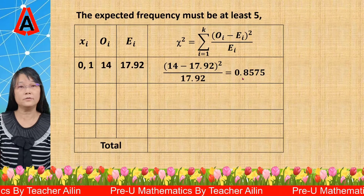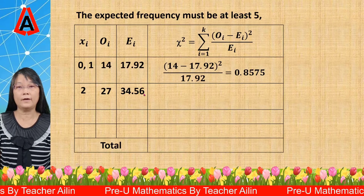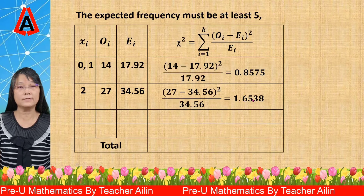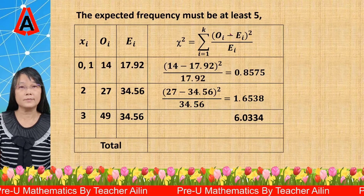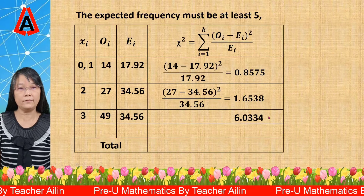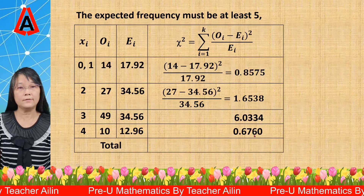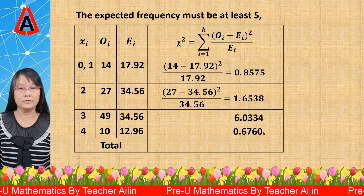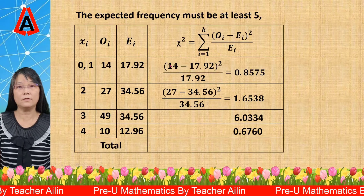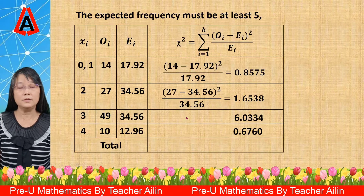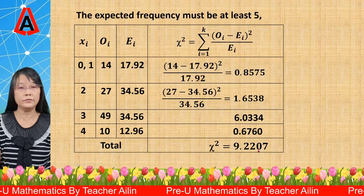Using the combined values, we substitute into the formula. For X = 0 or 1, O is 14 and E is 17.92, giving 0.8575. When X is 2, O is 27 and E is 34.56, giving 1.6538. When X is 3, O is 49 and E is 34.56, giving 6.0334. When X is 4, O is 10 and E is 12.96, giving 0.6760. Students are advised to show the working steps, substituting O and E at least two times. Finally, we total all the values to get chi-squared equals 9.2207.